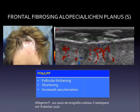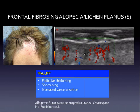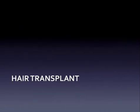Another very common alopecia is frontal fibrosing alopecia, a variety of lichen planus of the hair. In frontal fibrosing alopecia, we find follicular thickening, shortening, and increased vascularization in periactive lesions. As the disease progresses, we tend to see less vascularization.